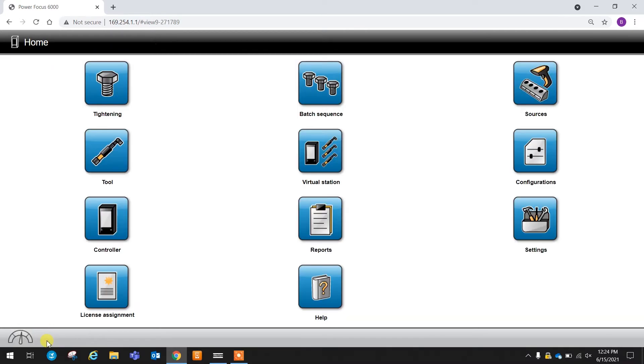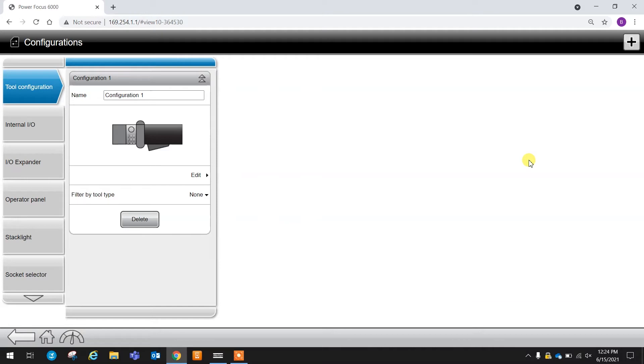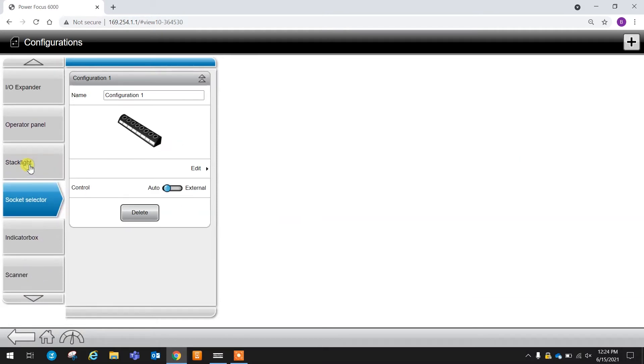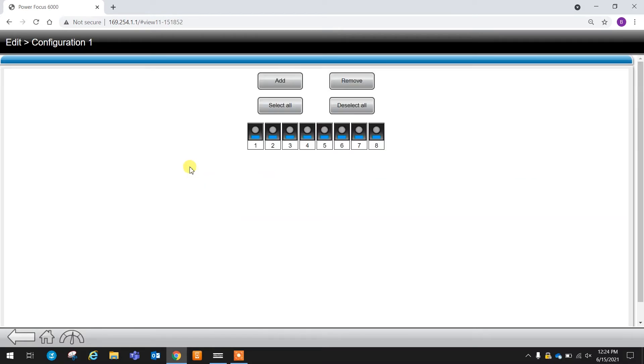I'm going to go home, go to my configurations tab, I'm going to go to my socket selector, I'm going to make sure that control is set to auto, since in this case we are not externally controlling the socket selector. And now in here, I'm actually going to remove the additional eight positions, and I'm only going to activate positions one and two. Because as you remember from before, we only have two sockets in this specific socket tray.